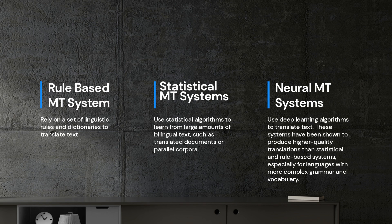Neural MT systems use deep learning algorithms to translate text. These systems have been shown to produce higher quality translations than statistical and rule-based systems, especially for languages with more complex grammar and vocabulary.